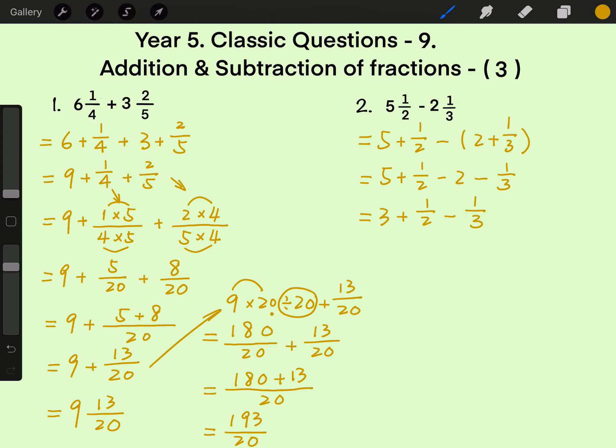Next, make the different denominators the same. 2 times 3 is 6. So for 1 half, 2 times 3, then numerator must times 3.